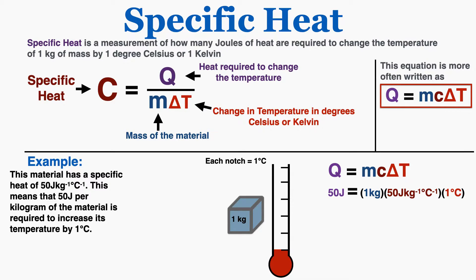The equation for specific heat is the heat required to change the temperature divided by the mass of the material multiplied by the change in temperature in degrees Celsius or Kelvin. This equation is more often written as the well-known Q = MCΔt, which really just comes from the definition for specific heat.